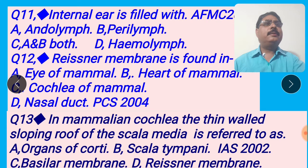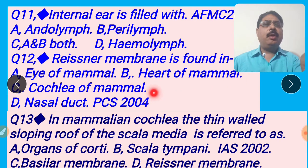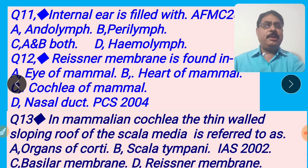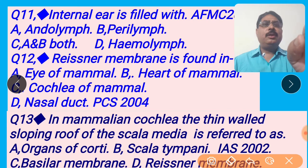Next question, question 12: Reissner's membrane is found in — eye of mammals; heart of mammals; cochlea of mammals; nasal duct. This question came in PCS 2004. There are three membranes present in the internal ear: Reissner's membrane, basilar membrane, and tectorial membrane. Please see about the membranes in detail in my video. So the right answer is cochlea of mammals, option C. I click option C for the right answer.